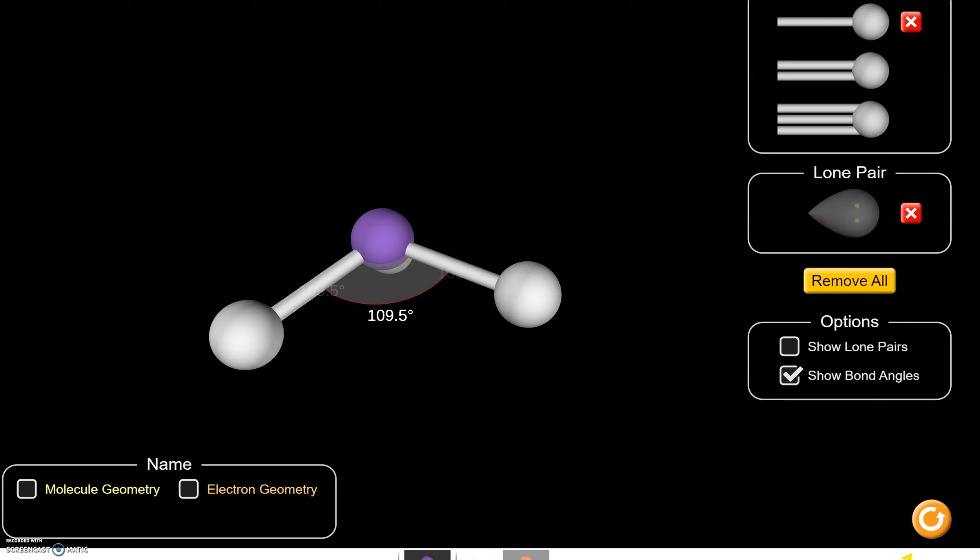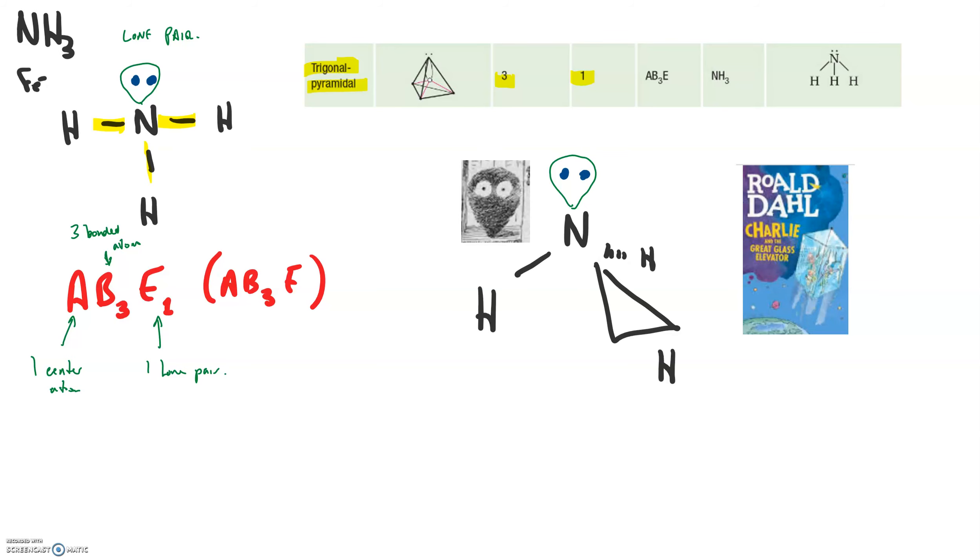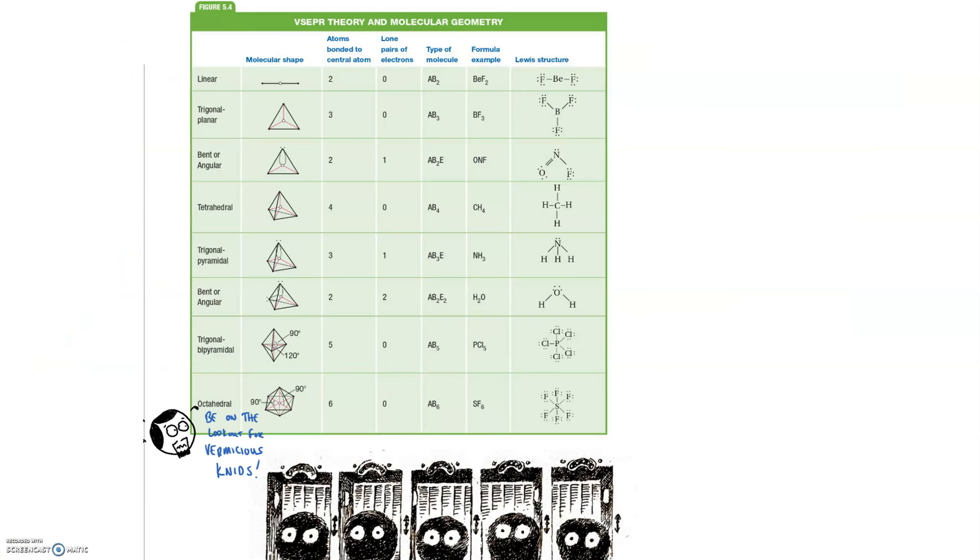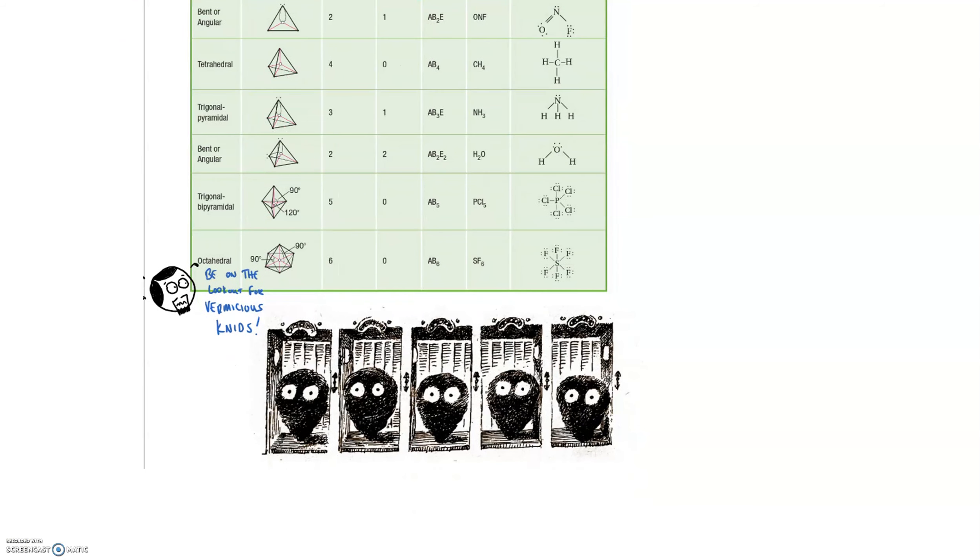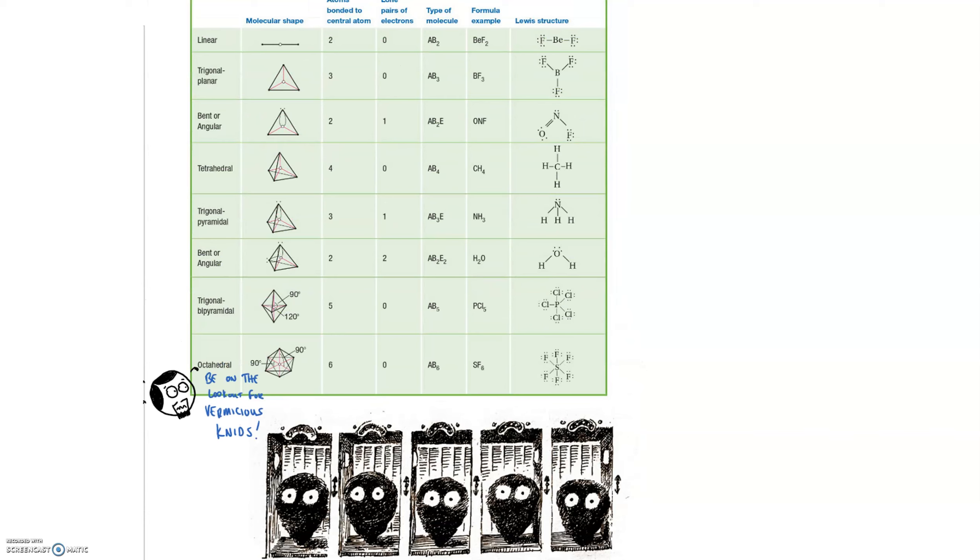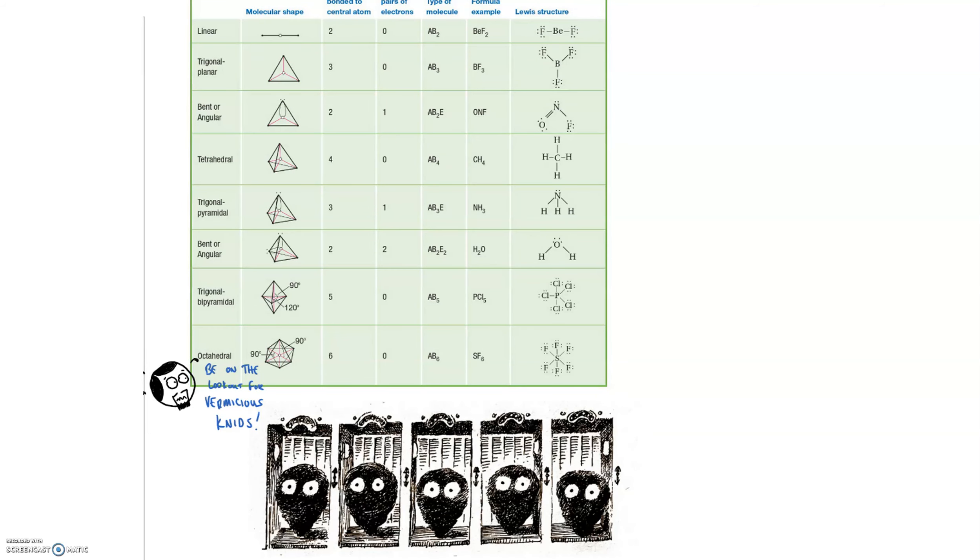So when we're looking at our chart, this is a shape called trigonal pyramidal because it's kind of a pyramid shape if we ignore the vermicious knid, and there's three of them. This takes a little bit of practice, and you want to keep in mind this chart. So I'm going to give you the whole big chart. It looks like this, and be sure to keep an eye out for these guys because they're nasty. Okay? Best of luck, and I'll see you on the next one.